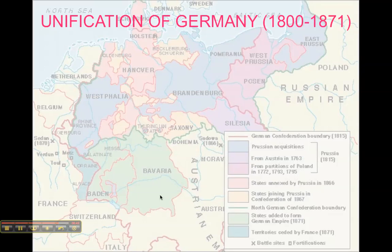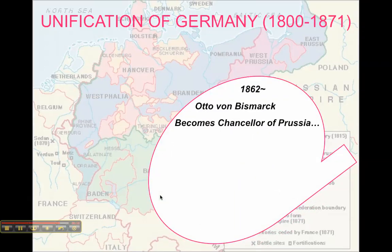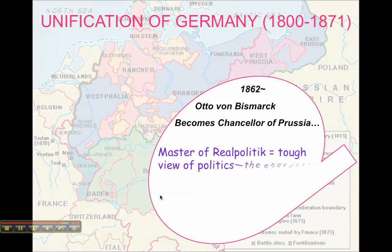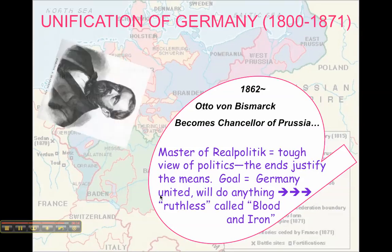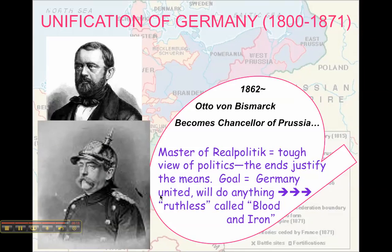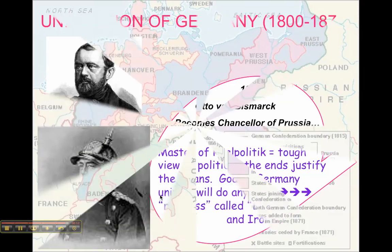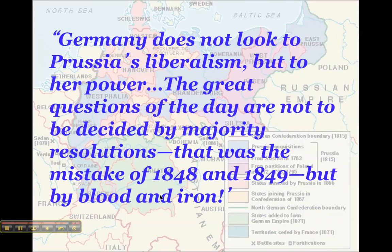Prussia's lead is furthered in 1862 when Otto von Bismarck becomes chancellor. He has a new, tough view of politics called realpolitik. He would like to unite Germany under Prussian leadership and is basically going to do anything to reach that goal — he's ruthless. He earns the nickname 'old blood and iron Bismarck' from a speech where he says Germany doesn't look to Prussia's liberalism, but to her power, and that the great questions of the day are not to be decided by majority resolutions as in 1840.